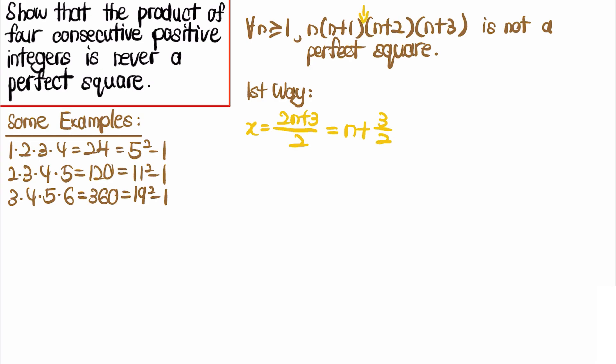The reason we let x = n + 3/2 is that we can now rewrite the whole product as (x - 3/2)(x - 1/2)(x + 1/2)(x + 3/2), making the terms more symmetric.